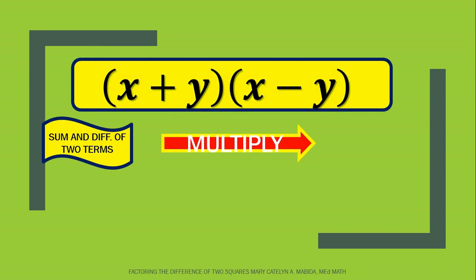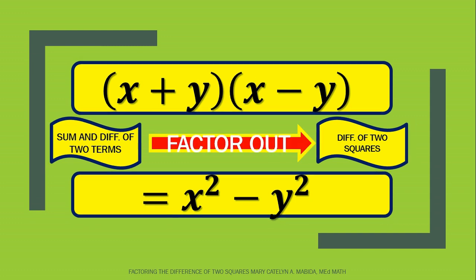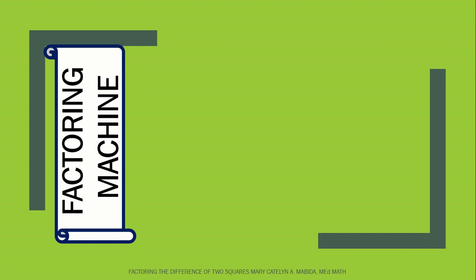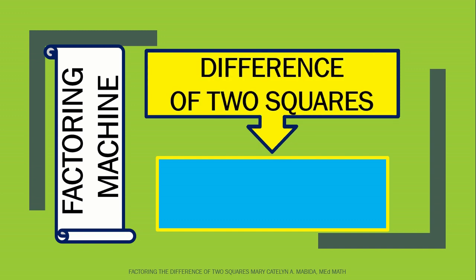Multiplying the sum and difference of two terms will get us the difference of two squares. And therefore, factoring out the difference of two squares will give us the sum and difference of two terms. Bravo! Now check out our factoring machine.